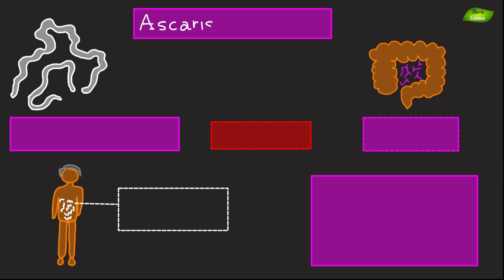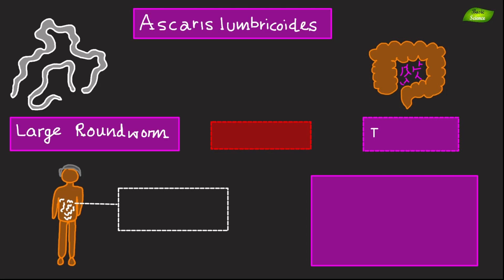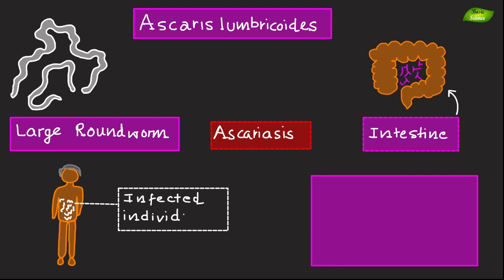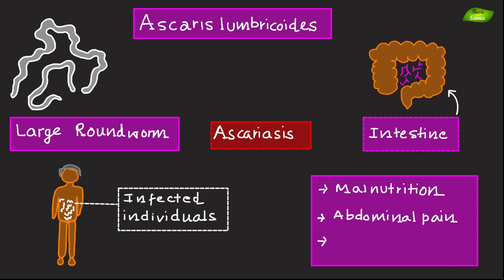Ascaris lumbricoides is a large roundworm living in the intestines, causing ascariasis. Infected individuals may experience malnutrition, abdominal pain, and intestinal obstruction.